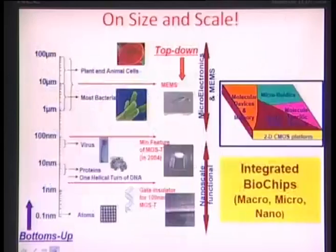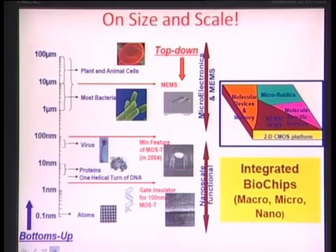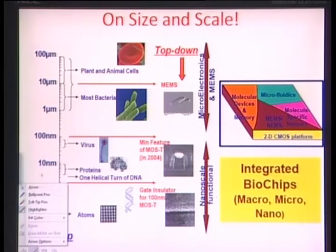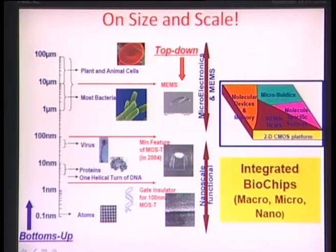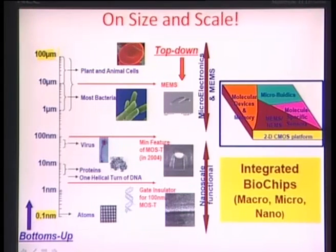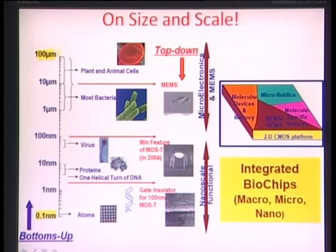Let us have a diagrammatic representation of the sizes and scales. The scale on the left starts from 0.1 nanometers all the way to about 100 microns. Human hair diameter is typically about 100 micrometers, so that is how small it is. And 0.1 nanometers is several thousands of that dimension — you are dividing that into almost about 10,000 times in order to achieve something like 0.1 nanometers.